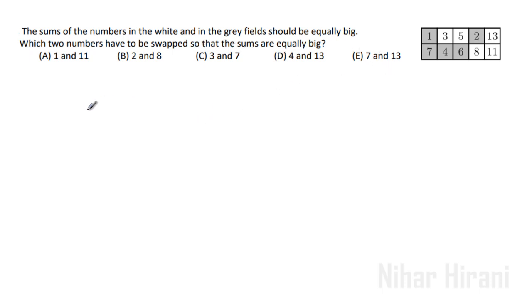Let's add all the grey numbers and check it out. 1 plus 7 is 8, 8 plus 4 is 12, 12 plus 6 is 18, 18 plus 2 is 20. That's the grey sum.